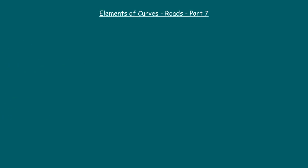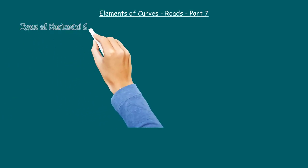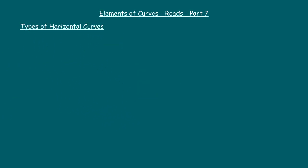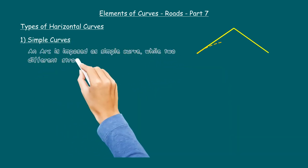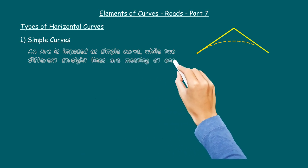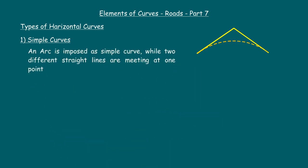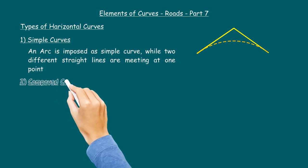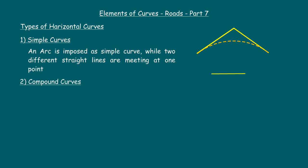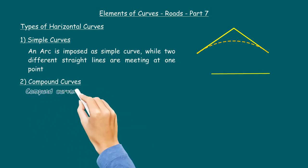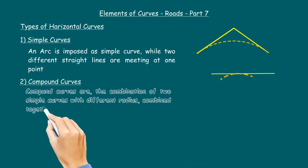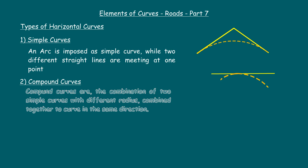Now let us see the types of horizontal curves. One: simple curves — an arc imposed between two different straight lines meeting at one point is a simple curve. Two: compound curves — compound curves are the combination of two simple curves with different radii combined together to curve in the same direction.